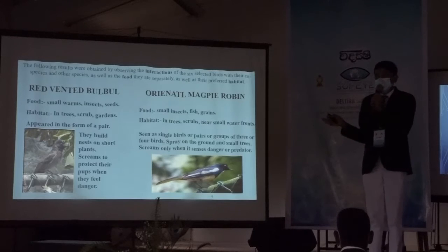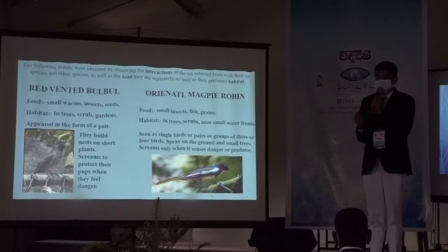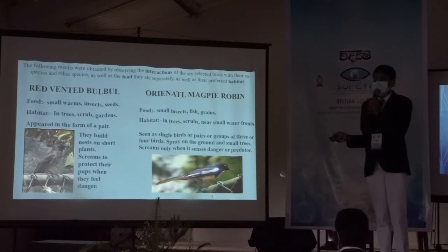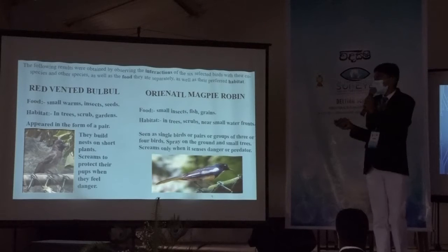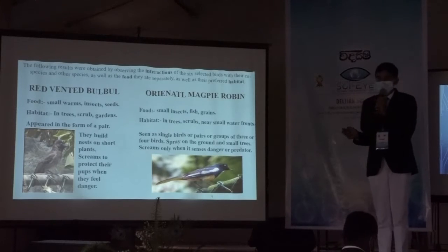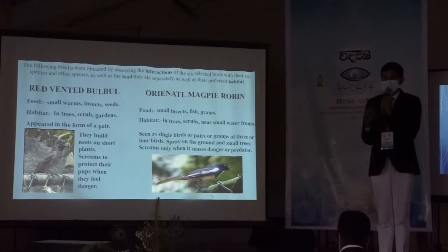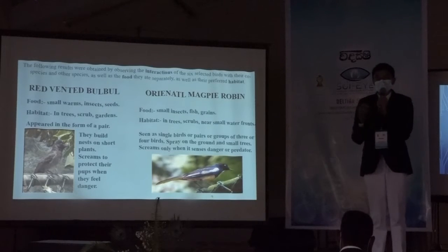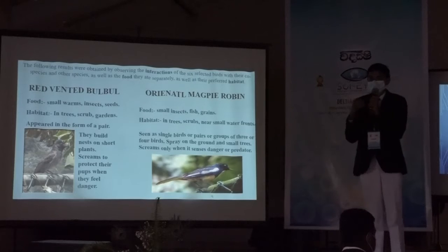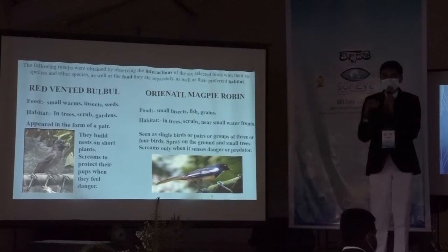This slide shows the interactions, food, and habitats of each bird. This picture shows the red-headed bulbul, which we call Kondolu Gurula. This bird mostly likes to eat small worms, insects, and grapes. These birds can be seen in small trees and scrubs, and they are typically found in small pairs.